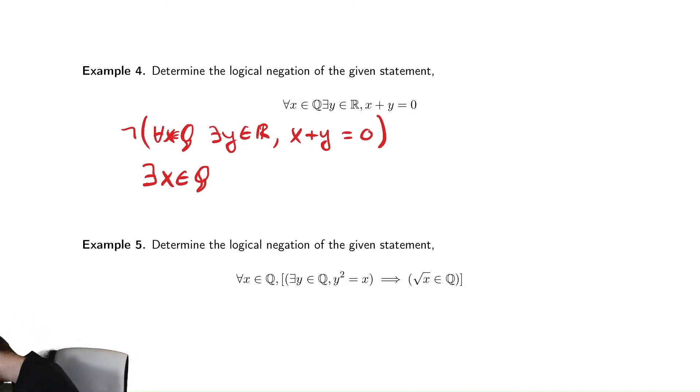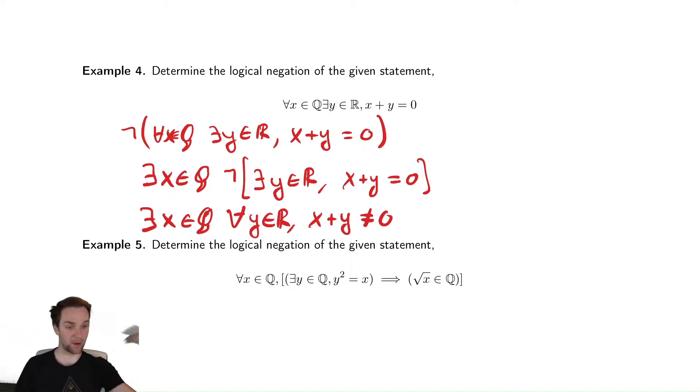So we have there exists in Q and then we have not there exists a y in the real numbers such that x plus y equals zero. And now we're down to a problem that's more similar to the ones we saw before. So there exists in Q such that not that statement. So we change this to there exists an x in Q such that for all y in the real numbers, x plus y does not equal zero. So now it's much more like the problems we did before.